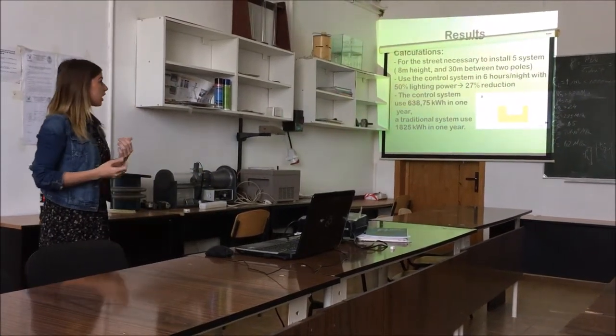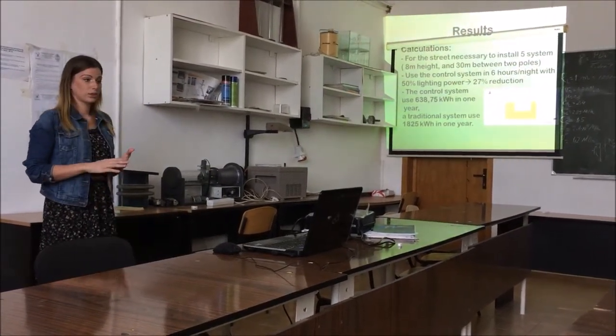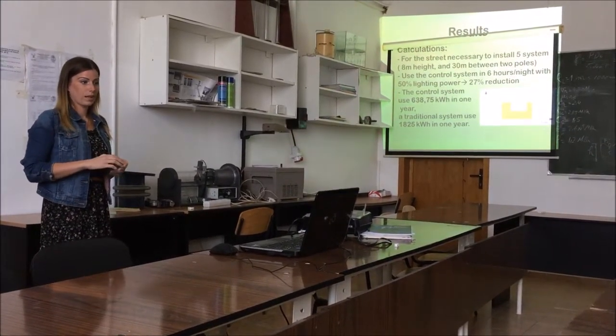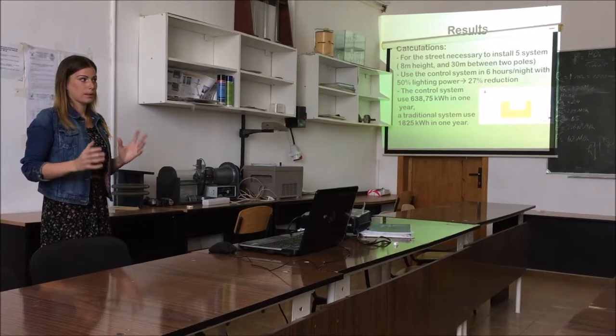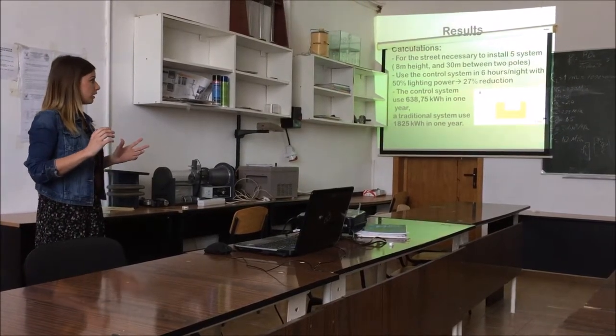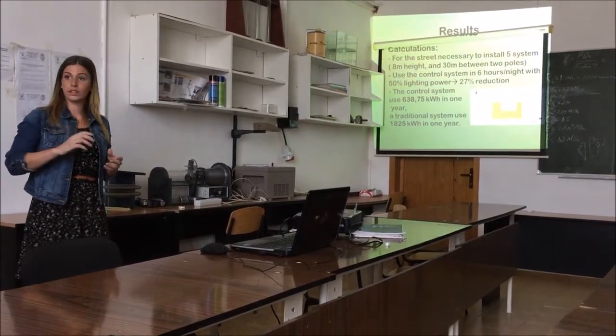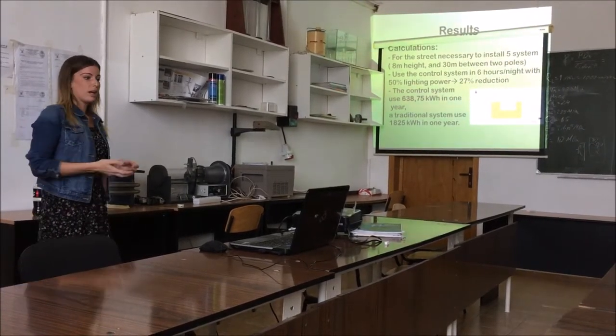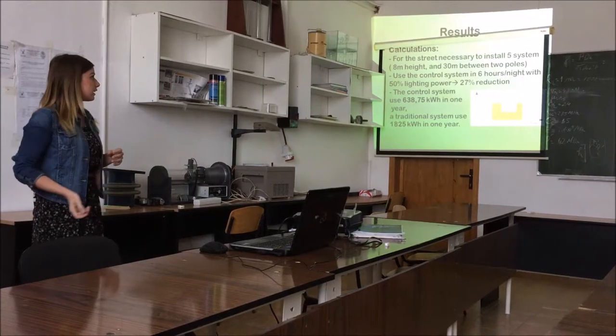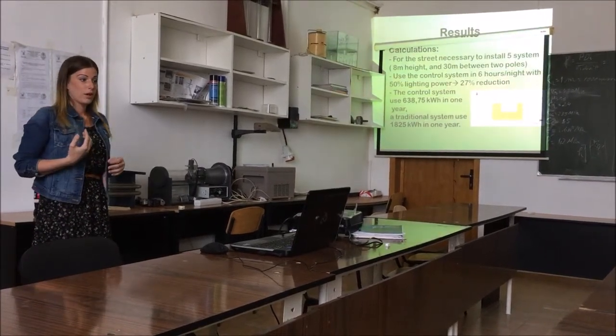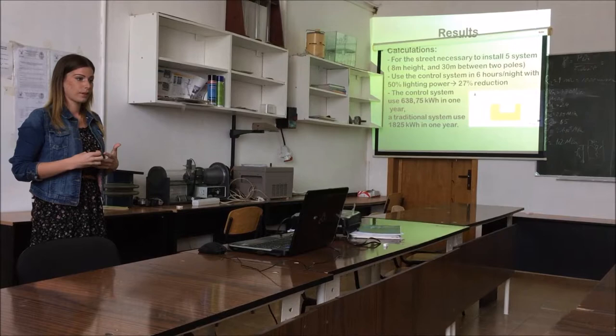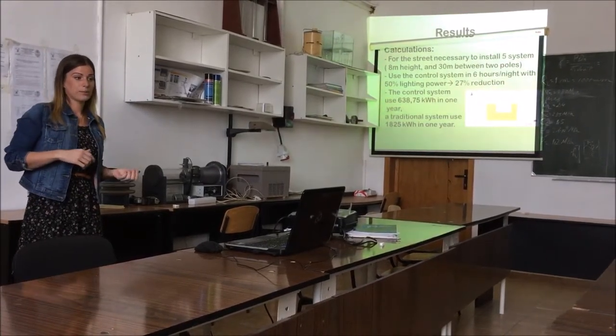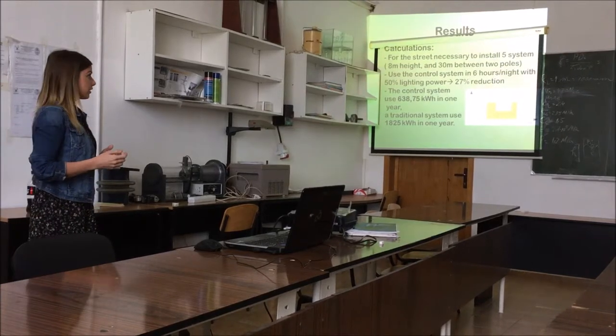The results from the calculation: it's a short street and the best solution is that the distance between two poles is 30 meters and the height of the poles is 8 meters.